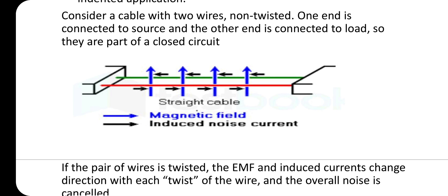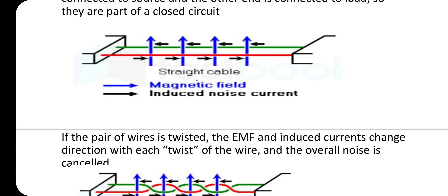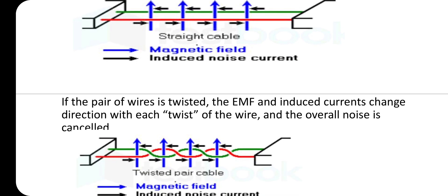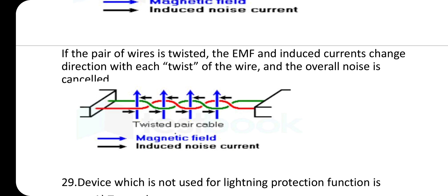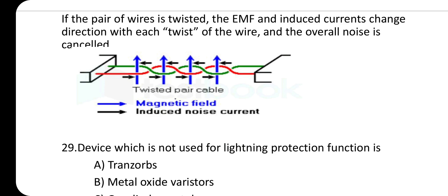Consider a cable with two wires: non-twisted, one end connected to the source and the other to the load, forming a closed circuit. If the pair of wires is twisted, the EMF and induced EMF change direction with each twist of the wire, and the overall noise is canceled.